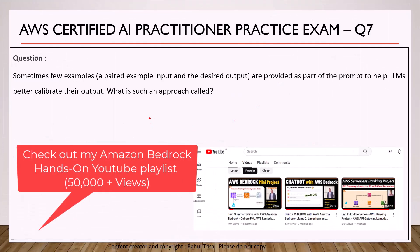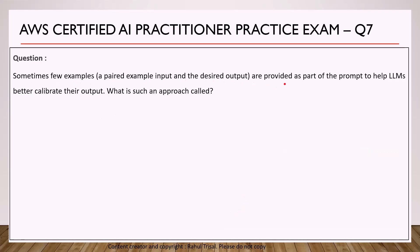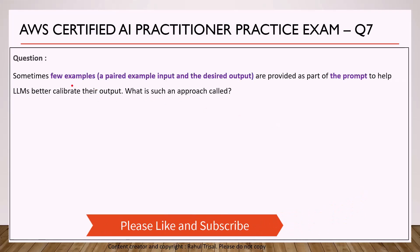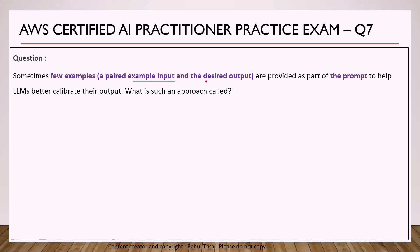Now let's look at the seventh question. It says: sometimes a few examples — paired example inputs and desired outputs — are provided as part of the prompt to help LLMs better calibrate their output. What is such an approach called? The key here is providing few paired examples of input and desired output as part of the prompt to help calibrate the output of the LLM.